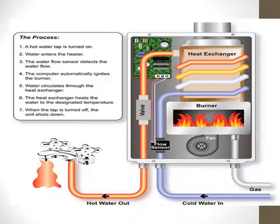Water circulates through the heat exchanger — from the blue pipe through the flow sensor, then yellow, then red — it is being heated. That hot water is then transferred to the hot water outlet for use. There is no on/off switch — it works with the tap. As you turn the tap anticlockwise, water flows. The flow sensor signals the computer to start. As soon as you turn the tap off, everything stops. It is a very simple system.